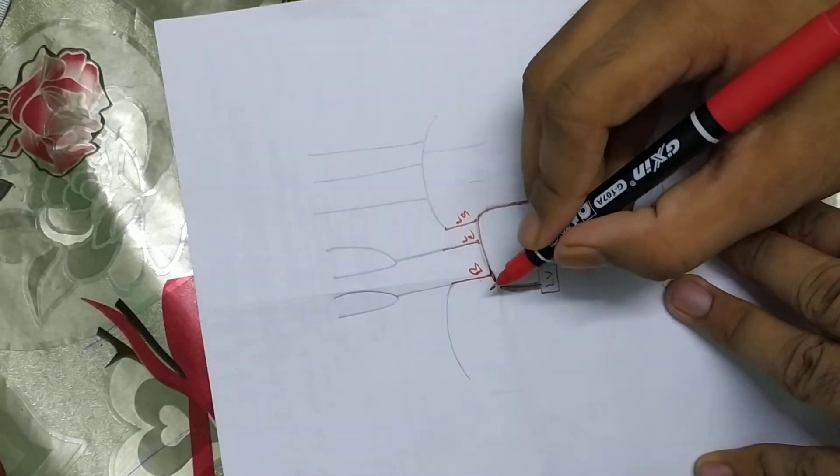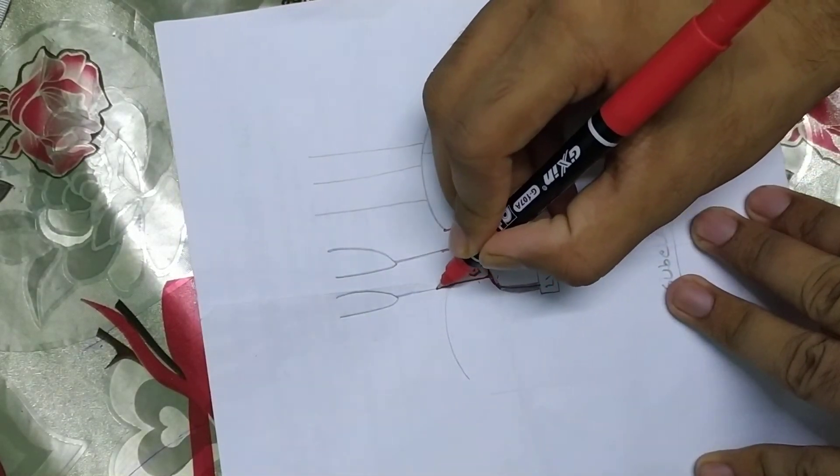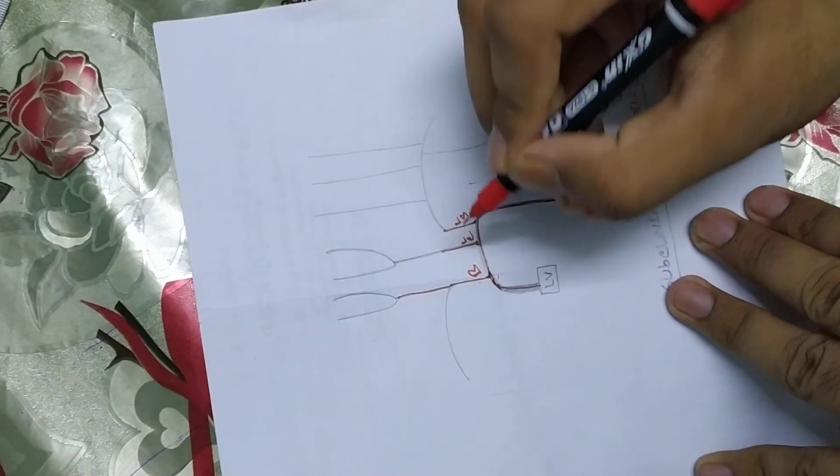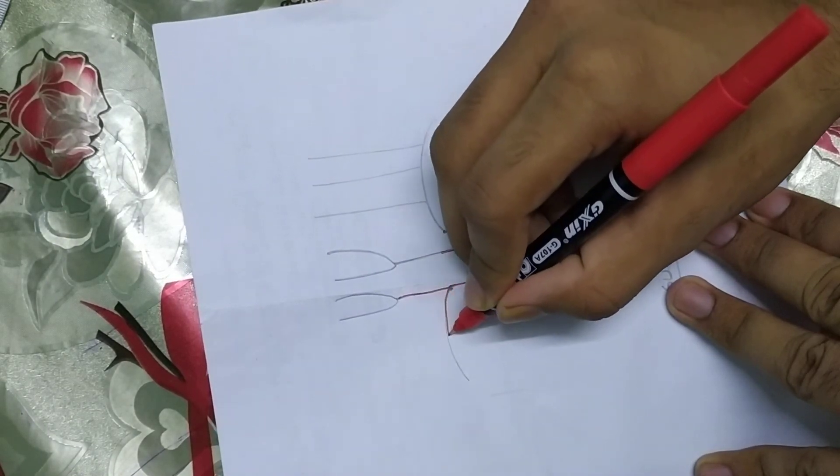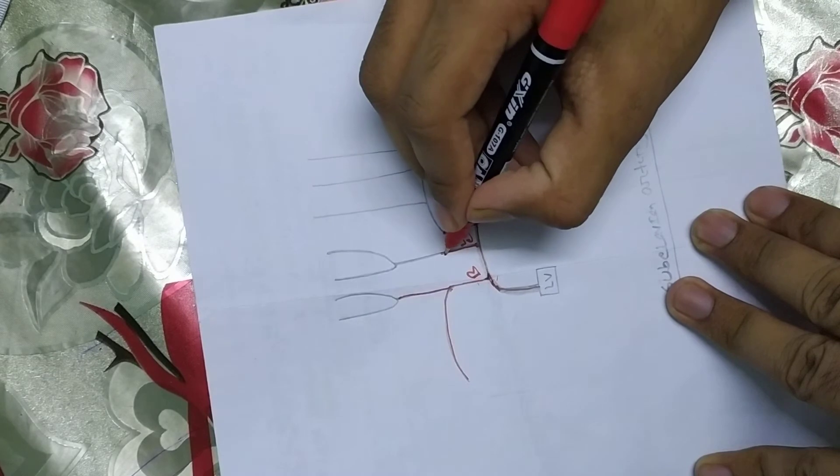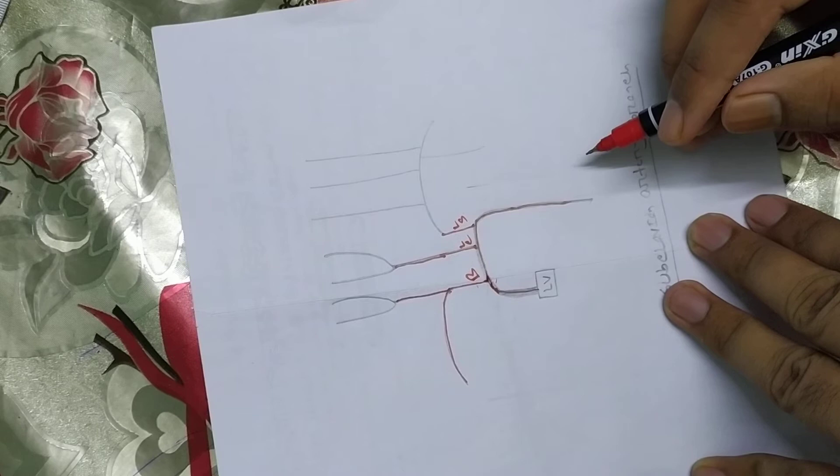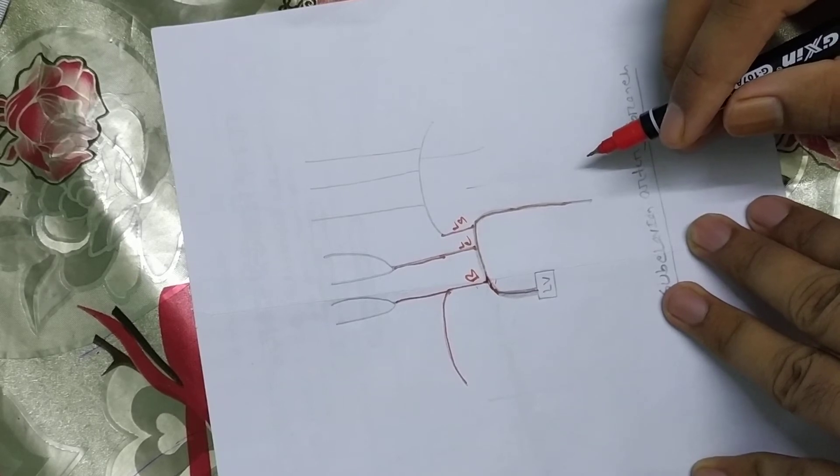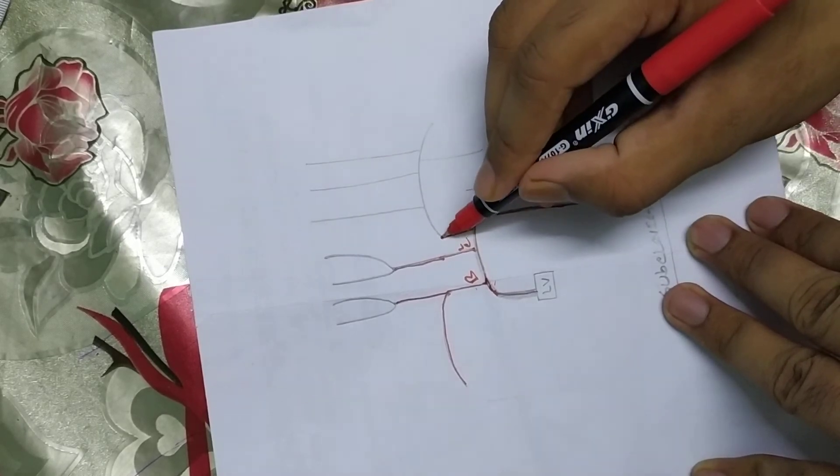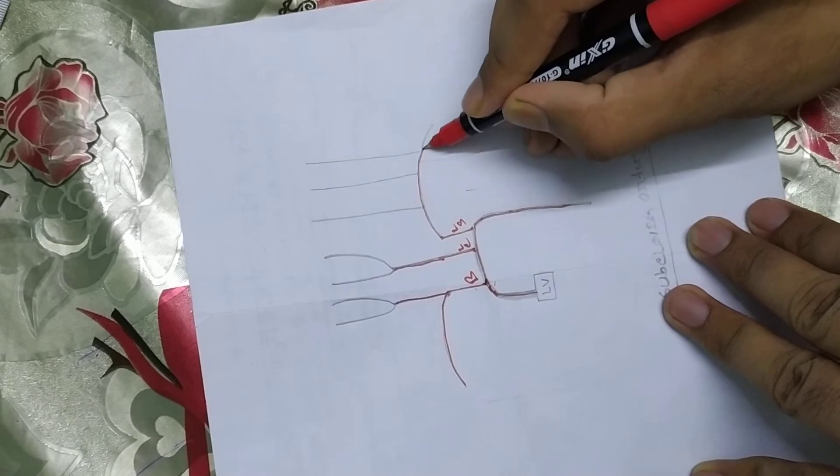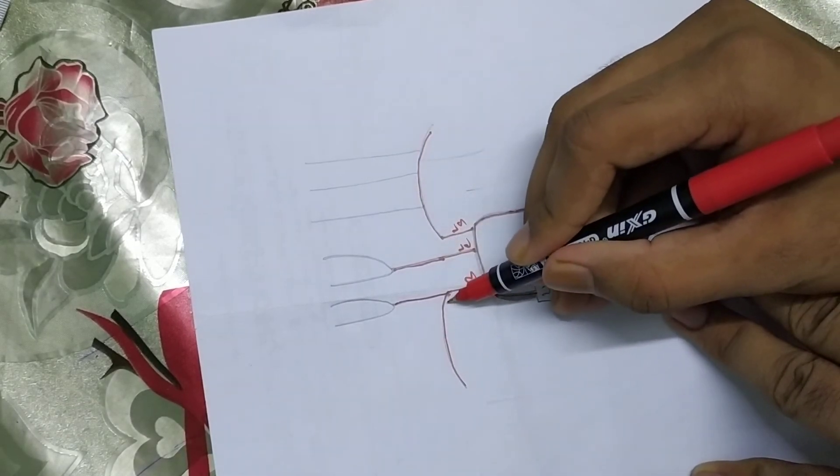The brachiocephalic trunk has two branches: the right common carotid artery and right subclavian artery.